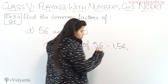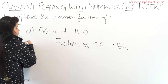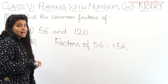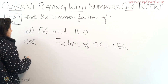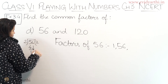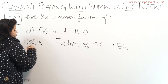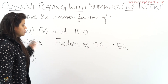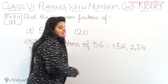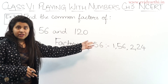Since the last digit of 56 is 6, it is divisible by 2. Dividing 56 by 2: 2 into 28 is 56. So both 2 and 28 are factors of 56, because 28 multiplied by 2 is 56.